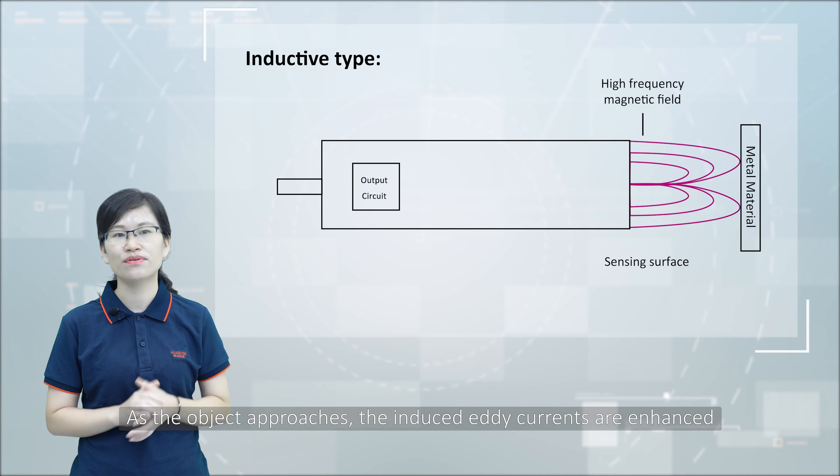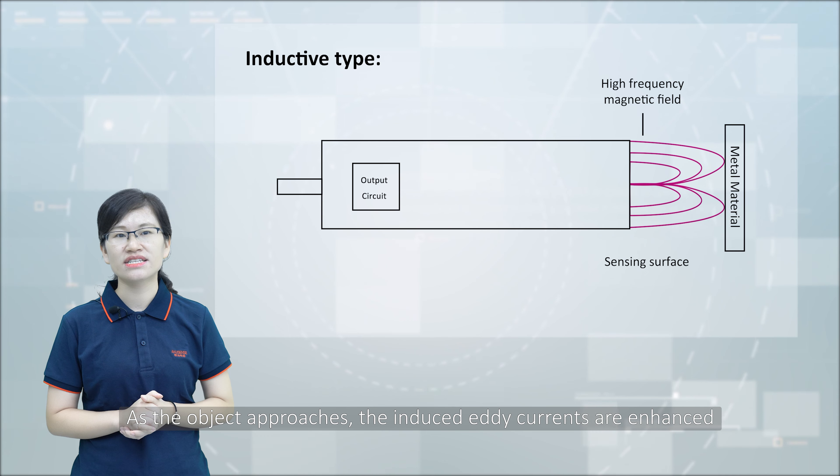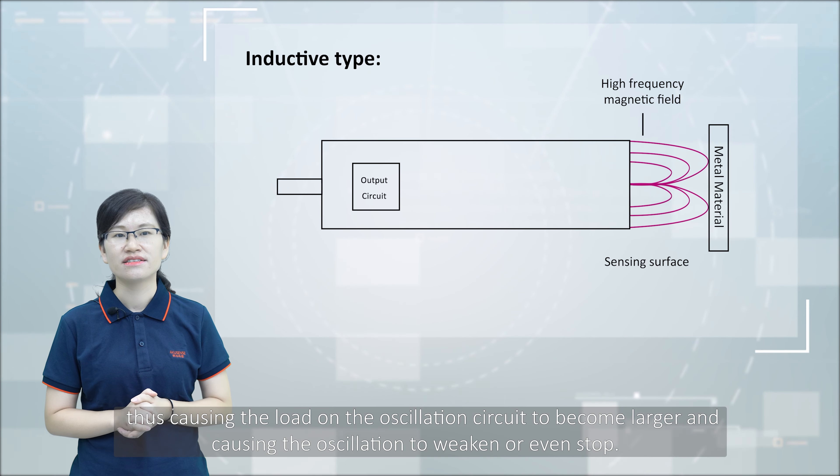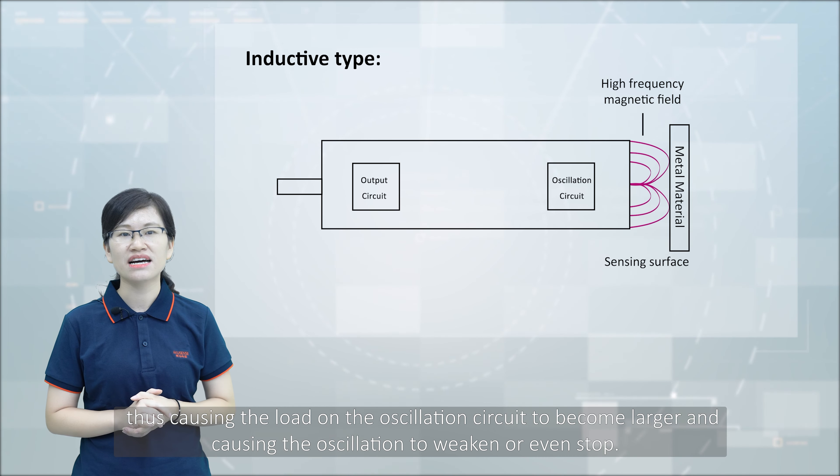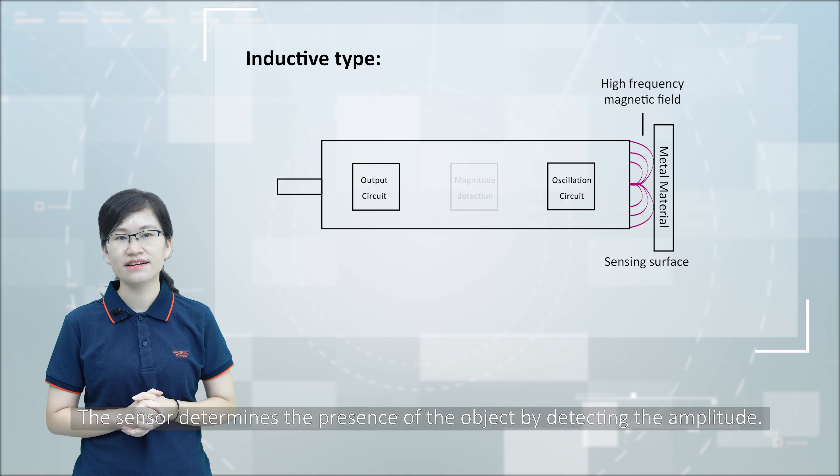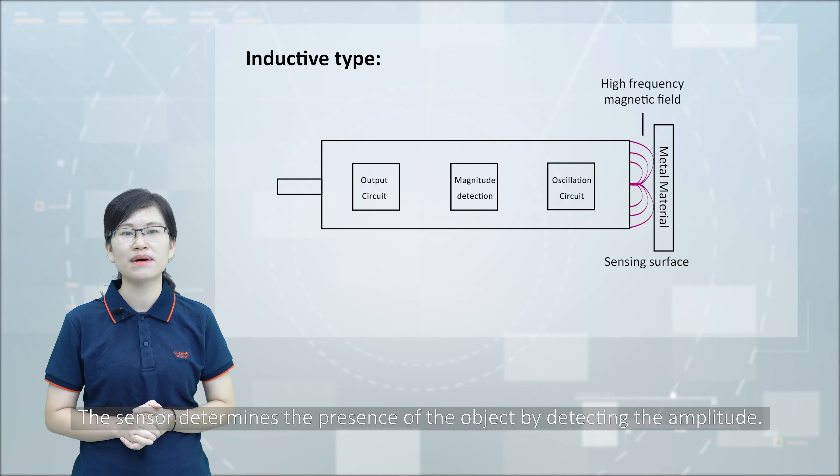As the object approaches, the induced eddy currents are enhanced, thus causing the load on the oscillation circuit to become larger and causing the oscillation to weaken or even stop. The sensor determines the presence of the object by detecting the amplitude.